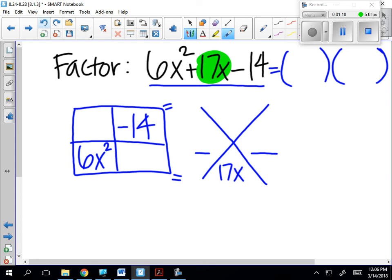The top number is the product of the diagonals because that's what the two numbers have to multiply to be. So 6x² times negative 14 is negative 84x². The next step can be kind of complicated and you might not know it right away.